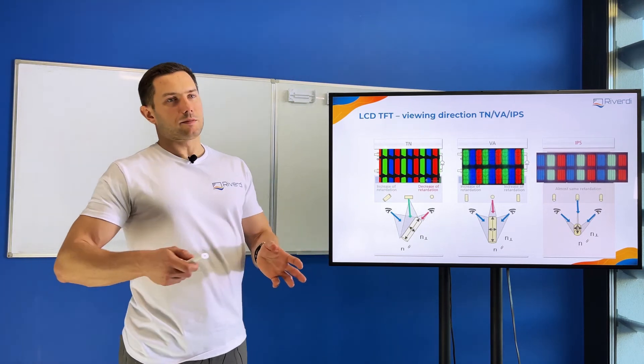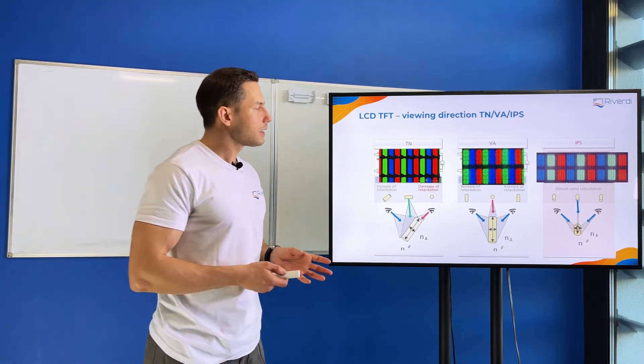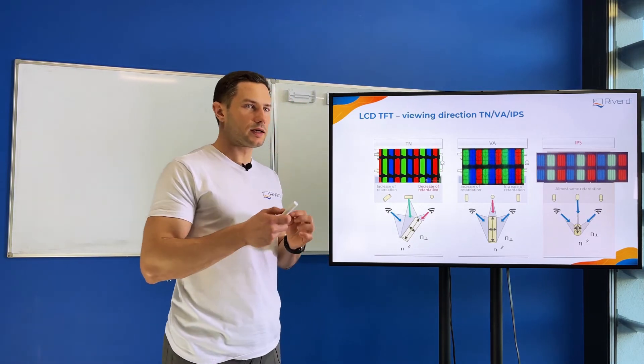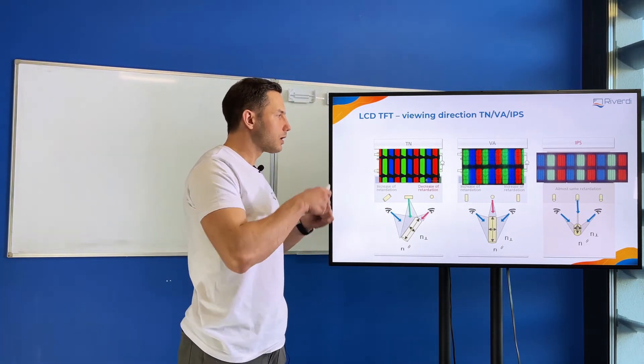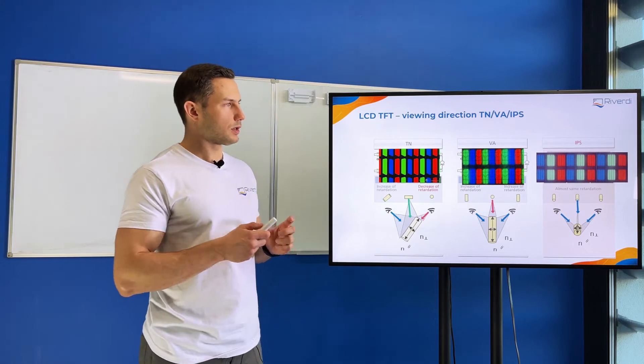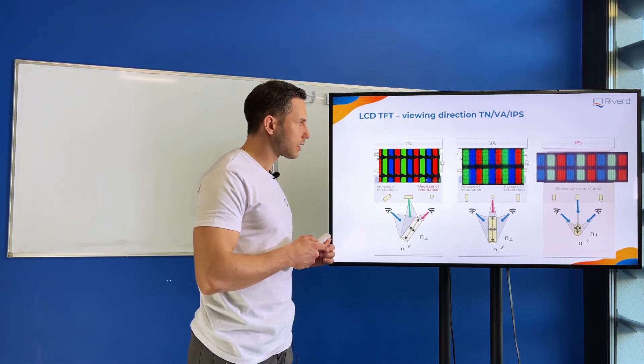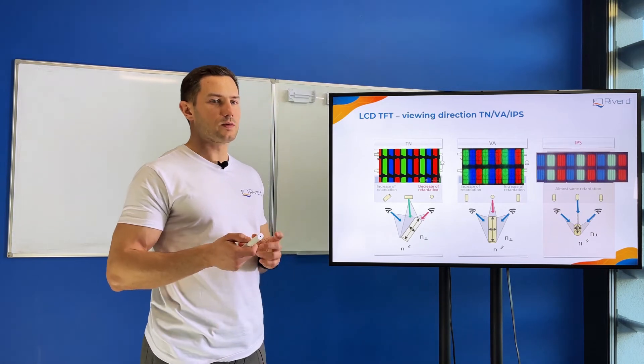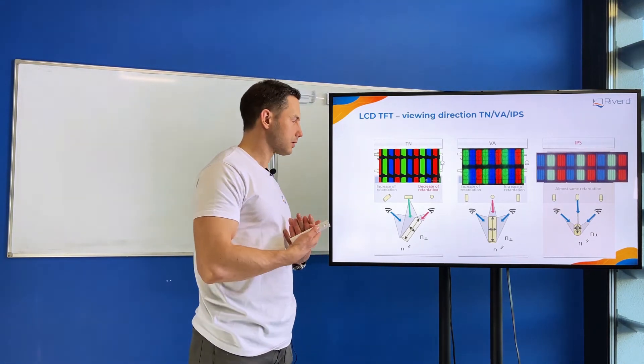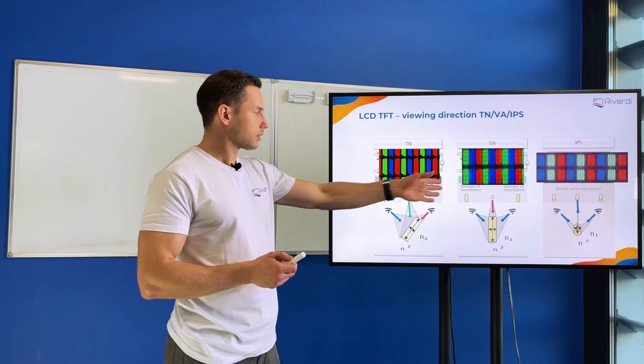But if we see VA or IPS displays, most displays will have sub-pixels of the sub-pixels. So it's even more complicated, where we have the sub-pixels divided into smaller parts where we put different organizations of the liquid crystals inside. And in this way we can achieve even wider viewing angles and even better colors for the user, but of course it's more complicated and more expensive to do.